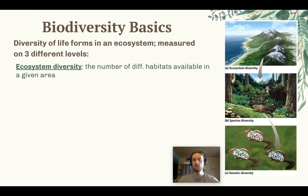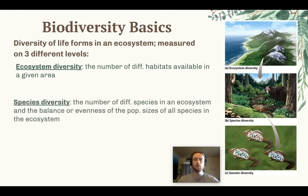The next level of biodiversity is the species level. If we look at this diagram, we can see all the different species present in an area. Species diversity can be measured in two different ways — the total number of different species in a given area, but also their evenness, or how the individuals of the entire ecosystem are distributed throughout those populations.